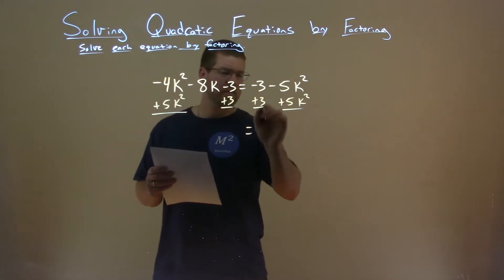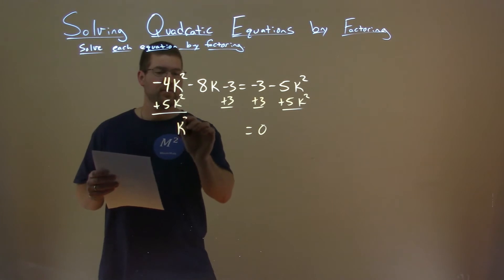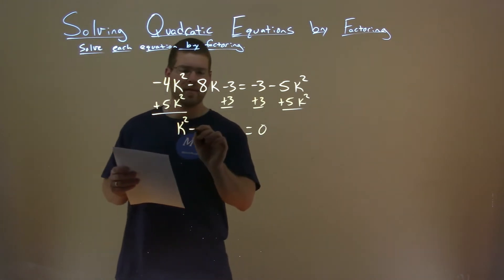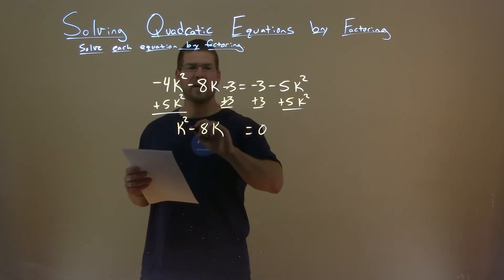Well, the right hand side they cancel at 0. Negative 4k squared plus 5k squared is just 1k squared. We bring down the minus 8k and then negative 3 plus 3 is 0 so they cancel.